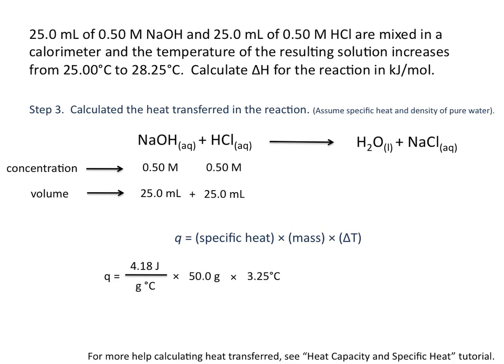We then need to calculate our temperature change. And delta T is equal to the final temperature, 28.25 degrees Celsius, minus the initial temperature, 25 degrees Celsius. This gives us a value for delta T of 3.25 degrees Celsius. And when we multiply these numbers together, you'll see that we can cancel out units of grams and degrees Celsius. This gives us an answer of 680 joules.